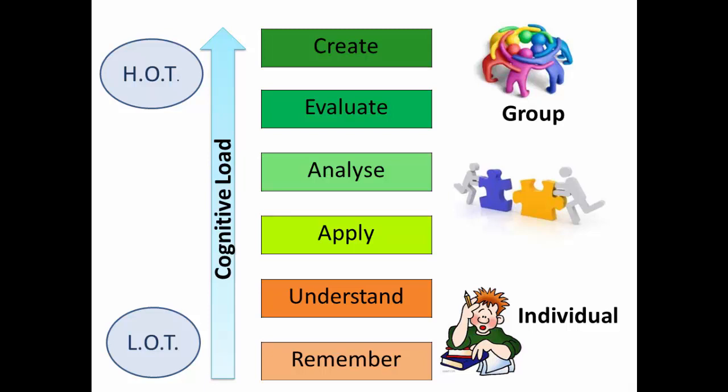The individual things — the remember and understand, the low order thinking, the listening to lectures — that can be done in the individual space. In many flipped learning environments, we draw a line through there and say that's a homework line. Below the line, let's do that in the individual space; above the line, let's concentrate that in the group space. And I think that's still an interesting framework.